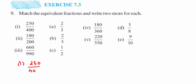I'm going to reduce 250/400 to its simplest form by canceling. I can cancel the zeros, so the number left is 25 upon 40. Again, 25/40 can be canceled in the 5 table — you can also factorize and cancel the common factor. So we get 5 upon 8.